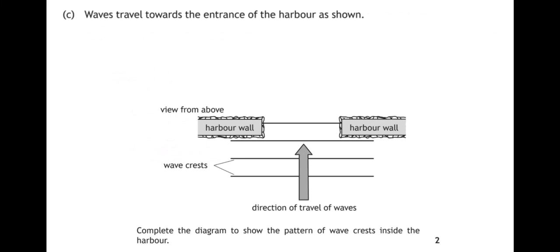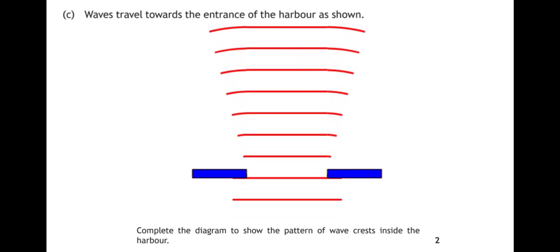Waves travel towards the entrance of the harbour as shown. Complete the diagram to show the pattern of wave crests inside the harbour. So we can see in the diagram that the waves are passing through a gap formed by the two parts of the harbour wall. So when waves travel through a gap, we get this effect called diffraction.